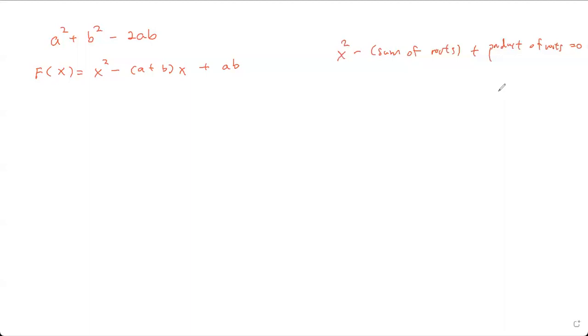A quadratic equation is always made up of this: the sum of roots and the product of roots. So if I need a and b to be the root of the equation, the sum of roots would be a plus b, and the product of roots would be a times b. So hence, this is the choice of equation that I made.